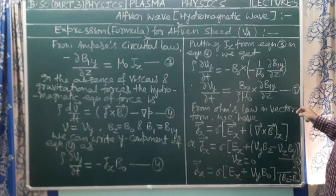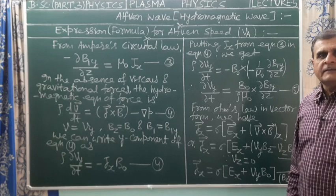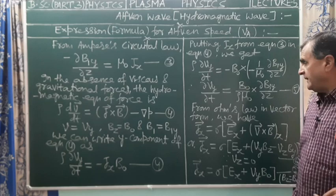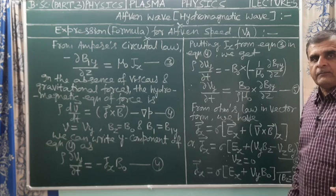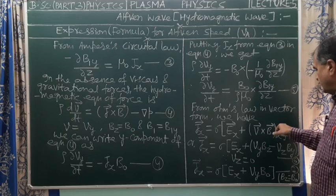From Ohm's law in vector form: j vector = σ × E vector, where σ is conductivity, j is current density, and E vector is the electric field. In the presence of both electric and magnetic fields, Ohm's law in vector form becomes: jx = σ(Ex + (v vector × B vector)x). The x-component of v vector × B vector can be obtained using the cross product formula.